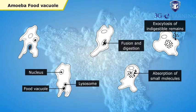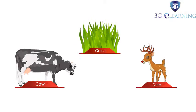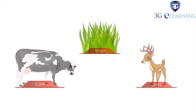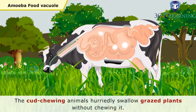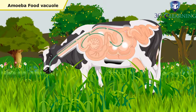It is the simplest of all organisms. Grass-eating animals like cows, deers, and buffaloes are called ruminants because of their habit of chewing cud or food all the time. This habit is called rumination. The cud-chewing animals hurriedly swallow grazed plants without chewing it. Digestion occurs later in a detailed manner.